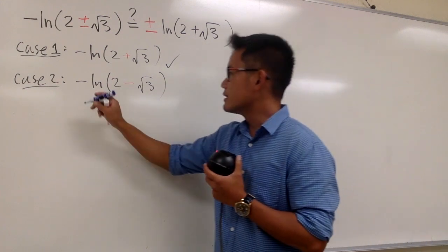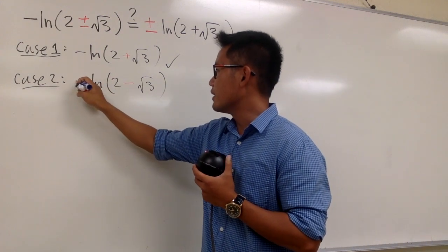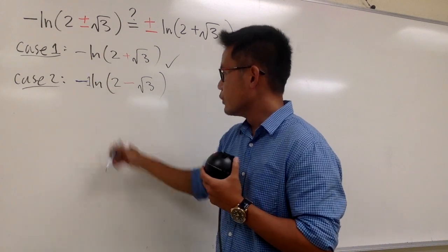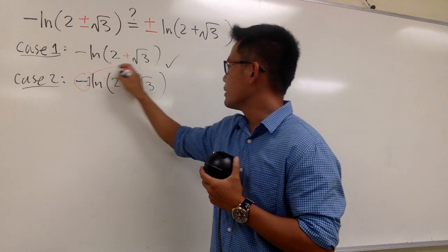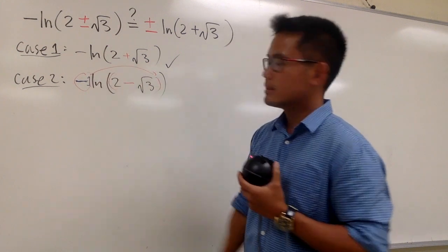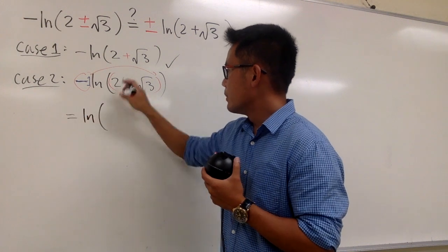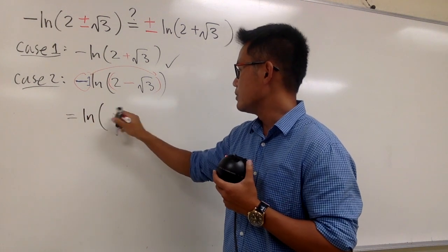First of all, we do notice that we have this negative in front of the ln, and this is technically like negative 1. So of course, we can take this and bring that to the top as the exponent. So in another word, we can look at this as ln parentheses, and this is going to be, let me just write it down like this,